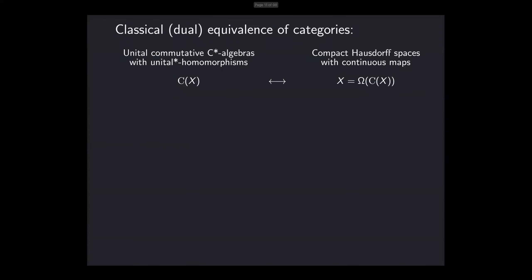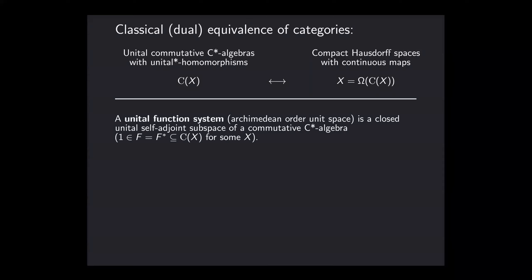Let me back up and talk about this classical dual equivalence of categories between compact convex sets and function systems. The model is motivated by the result from the basic theory of classical commutative C*-algebras: unital commutative C*-algebras equipped with unital star homomorphisms are categorically dual to compact Hausdorff spaces equipped with continuous maps. This is essentially saying that if you're studying one, you're also studying the other — anything you can do on one side you can do on the other.